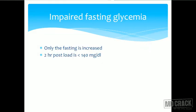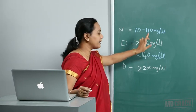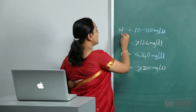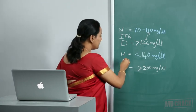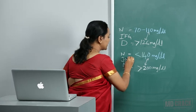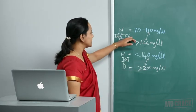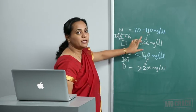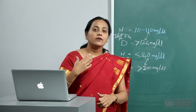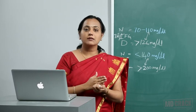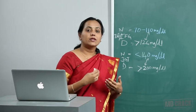There is one more term: impaired fasting glycemia (IFG). This is when the fasting blood glucose is between 110 to 126 milligrams per dl, but the two-hour post-load value is less than 150 milligrams per dl — so only the fasting value is abnormal. These people are at lesser risk than those with impaired glucose tolerance, but still need follow-up and may require repeat testing to determine further management.